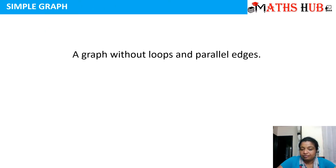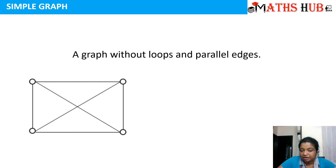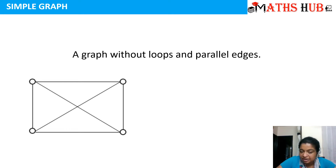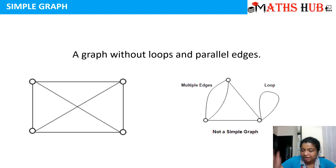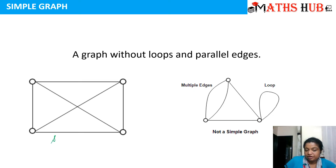Next is a simple graph. Any graph which does not contain any loops and parallel edges is said to be a simple graph. For example, in the first graph you can see there are no loops — none of the vertices are connecting themselves — and neither are there any multiple or parallel edges. But in the second example, there is a multiple edge and a self-loop, so the second one is not a simple graph. The first is a simple graph, but the second one is not.